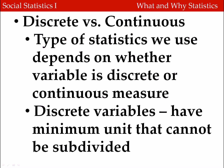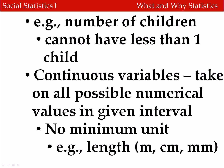When doing statistics, we also consider whether the variable is measured as discrete or continuous. Discrete variables don't have any minimum unit — that is, they cannot be subdivided. An example is the number of children; you can't have less than one child. Continuous variables, in contrast, take on any possible values in an interval — they have no minimum unit. An example is length, which can be expressed in kilometers, meters, centimeters, millimeters, and so on, with no minimum unit.